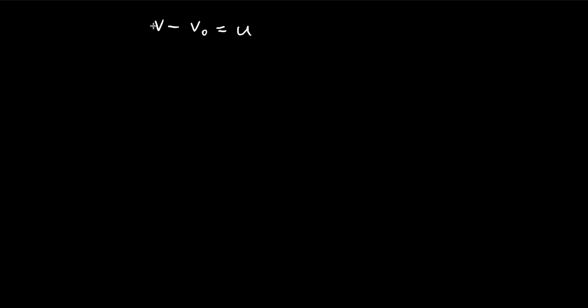For this problem, we're going to have to use something called the rocket equation. The rocket equation tells us that if we want to find the velocity of a rocket, given that the initial velocity is v0, it's given by this formula. So m0 is the initial mass, and m is the mass that corresponds to the velocity v — when your rocket is traveling at speed v, it has mass m. And u is just the speed that the rocket expels the fuel, relative to the rocket's frame. This is the rocket equation, and using this we can solve this problem.